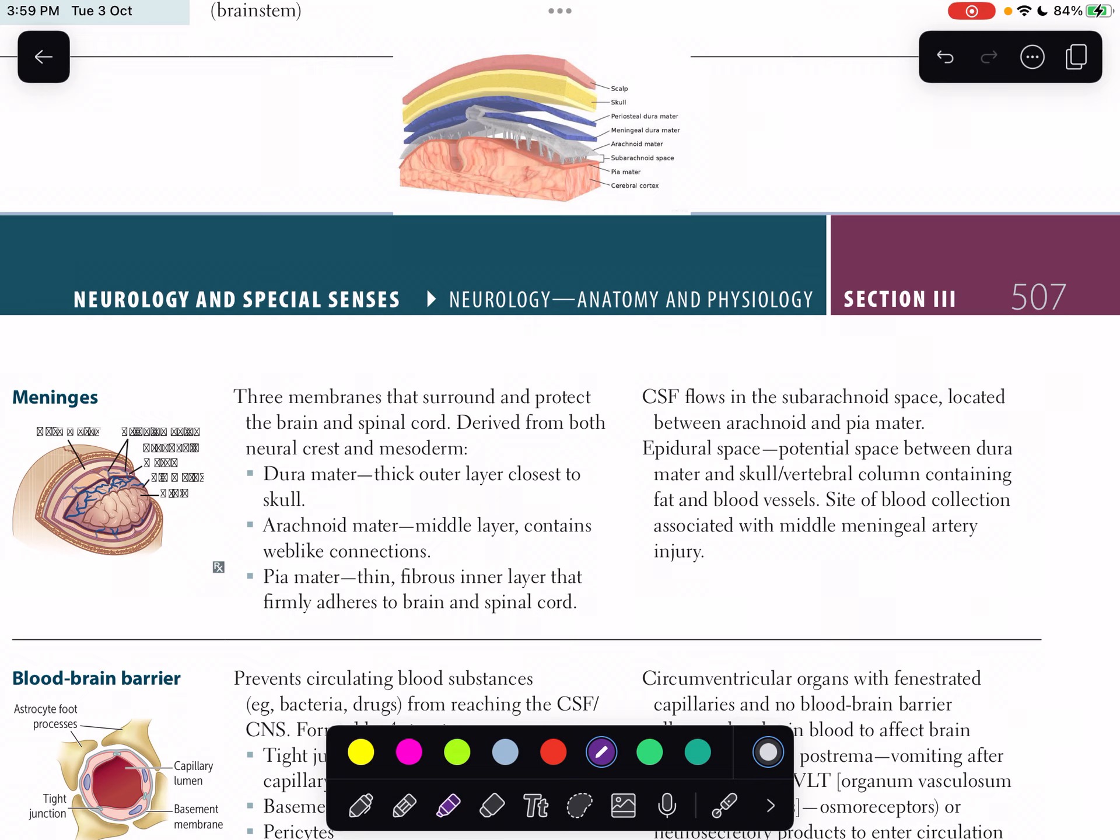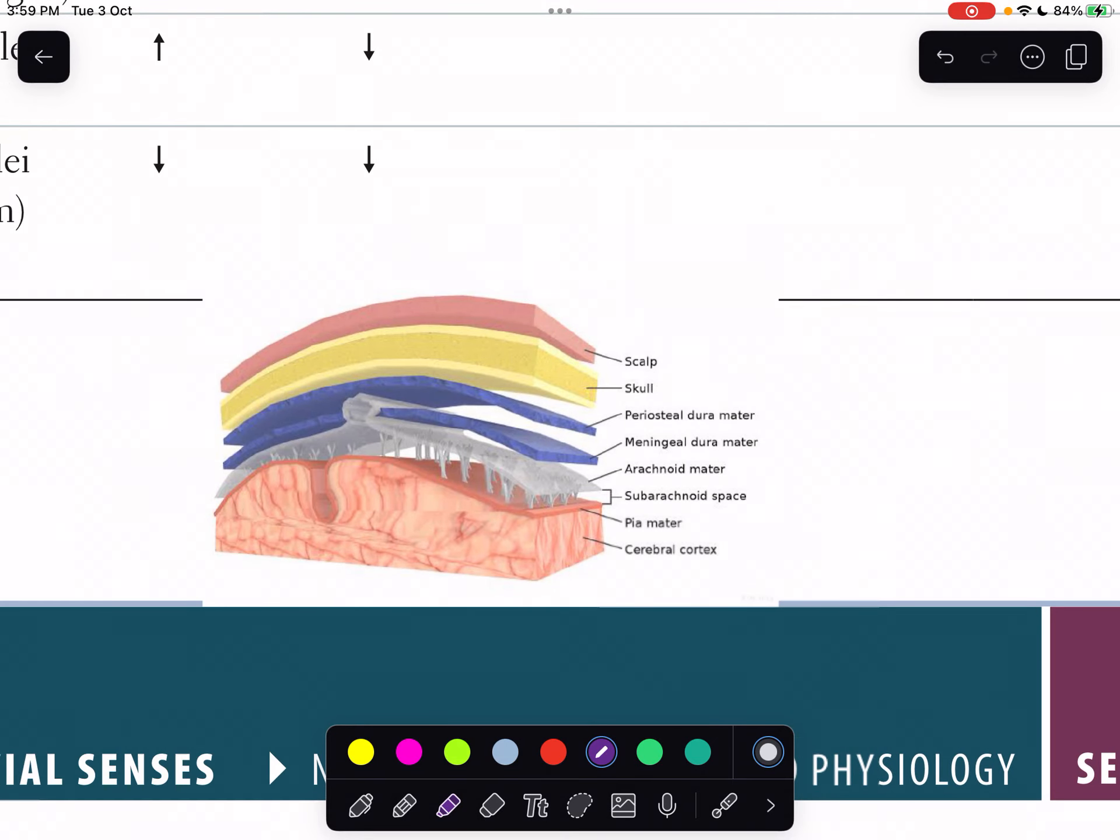Now it has three layers. First, let's see this diagram. It has basically three layers: dura matter, then arachnoid matter, and then pia matter. The dura matter has two parts: periosteal and meningeal. Let's start from here - this is scalp, then your skull bone. For bone, the word used is periosteum.